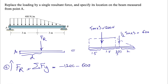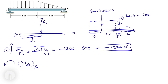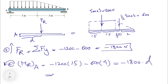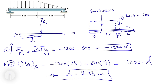The resultant force FR is the sum of forces in the y-direction: minus 1200 minus 600, giving minus 1800 N. Setting the moment of FR about point A equal to the sum of moments from both distributed forces — minus 1200 times 1.5 minus 600 times 4 — and equating to minus 1800 times d, we solve to get d equals 2.33 meters from point A.